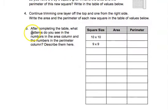After completing the table, what patterns do you see in the numbers in the area column and the numbers in the perimeter column? Describe them here.